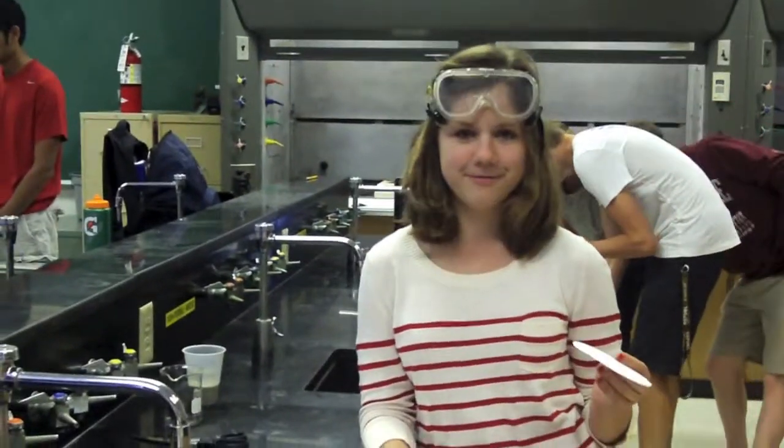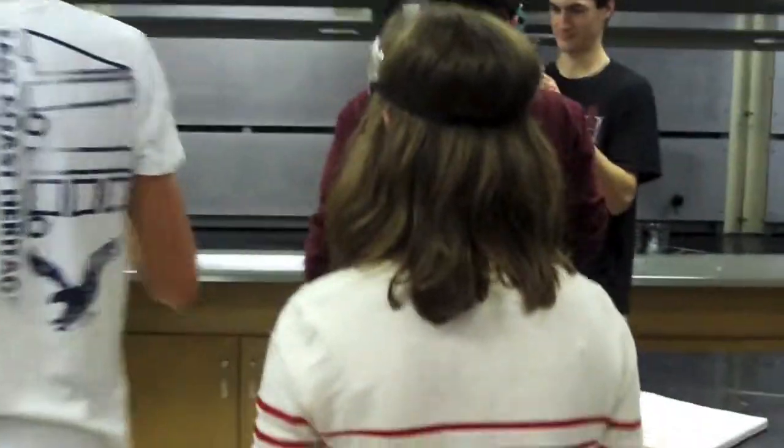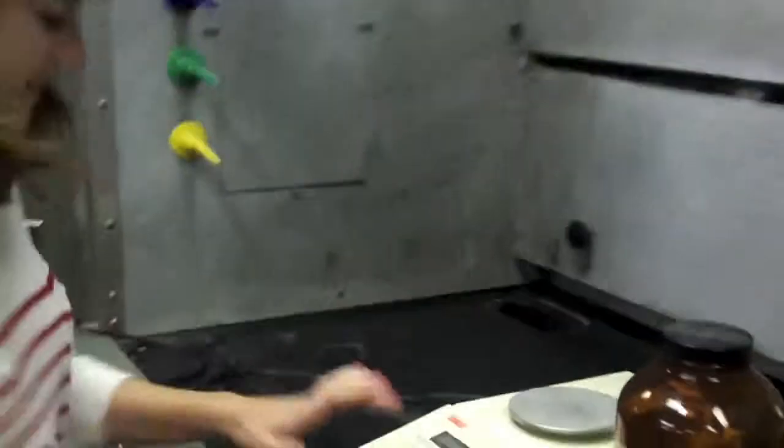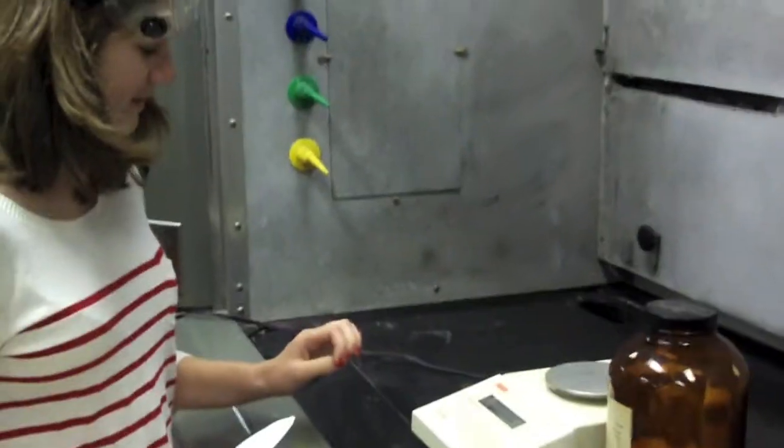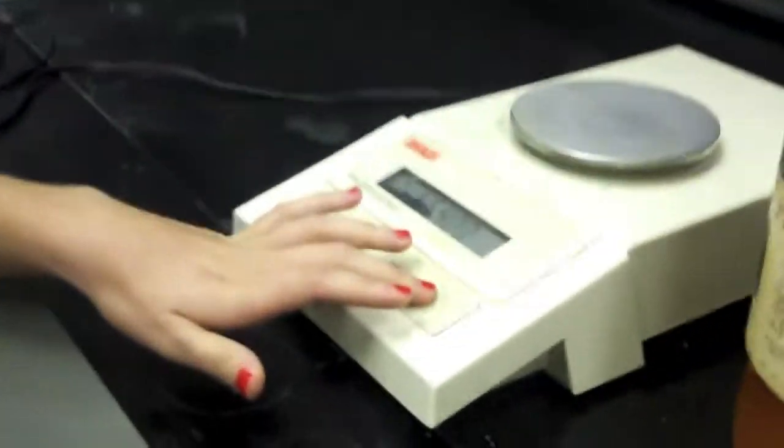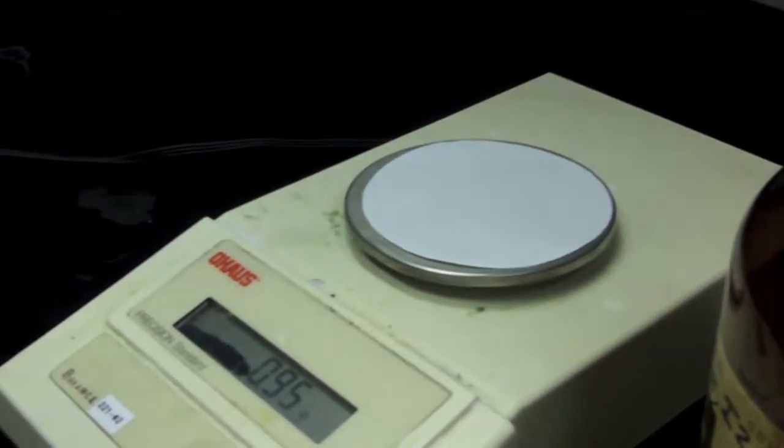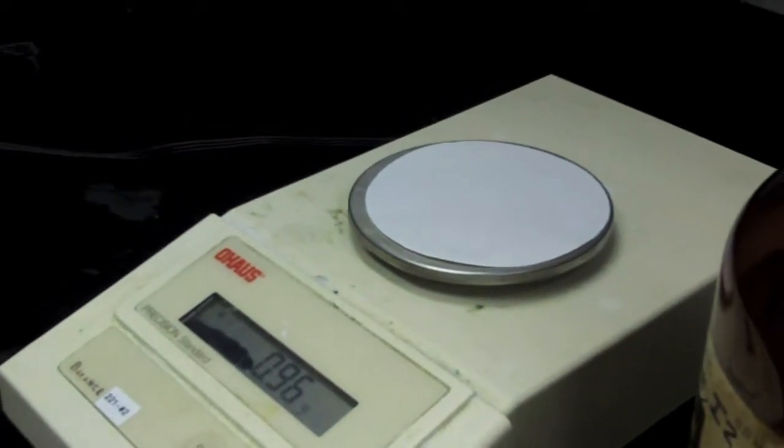The first thing you should do is tear the filter paper and weigh it so that you know the weight of the solid plus the paper. So we'll go over to the scale. Turn on the scale and make sure it says zero. Place the filter paper on and record the weight of it, which is 0.96 grams.